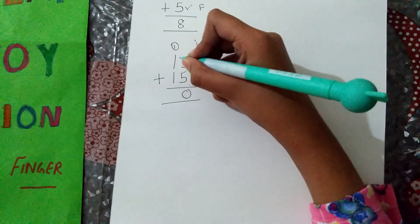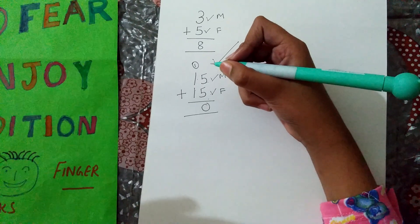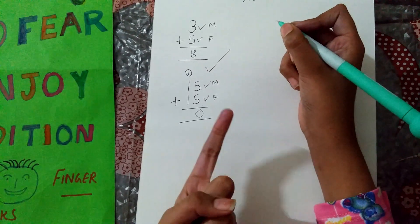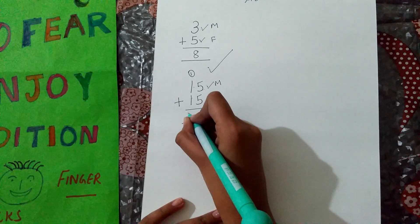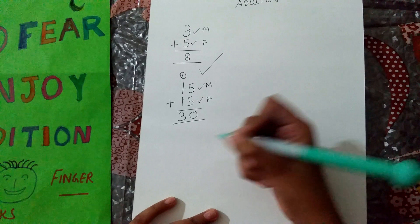You know 1 plus 1 equals to 2. So, 2 plus 1 equals to, after 2, 3. This is 30. That is the correct answer.